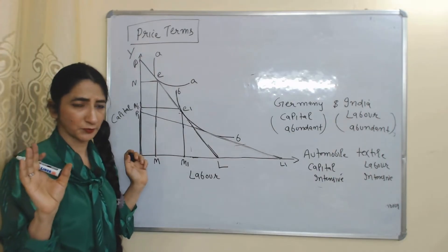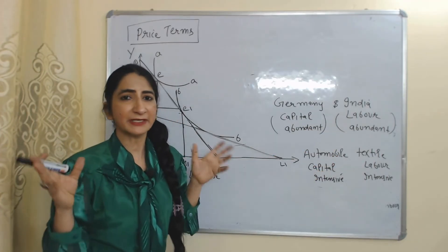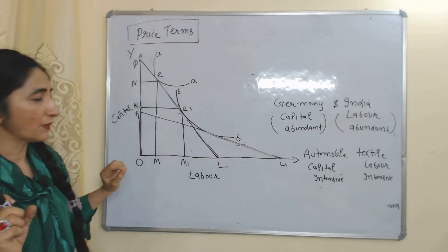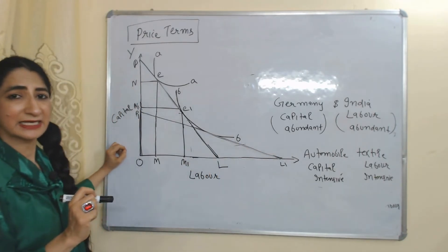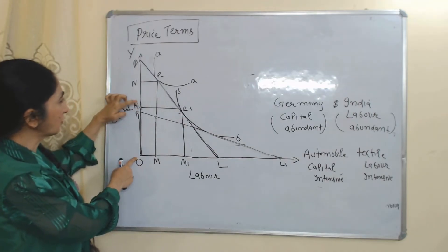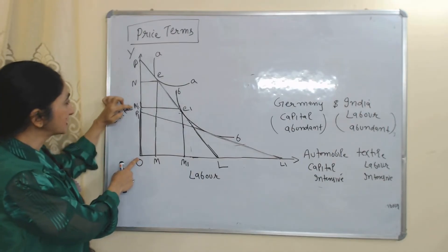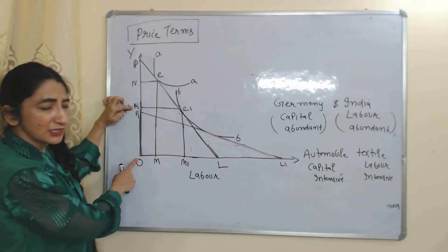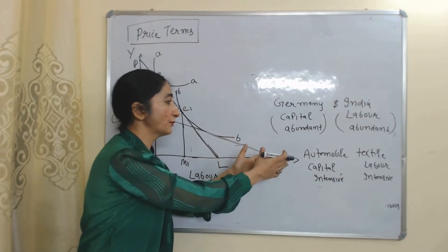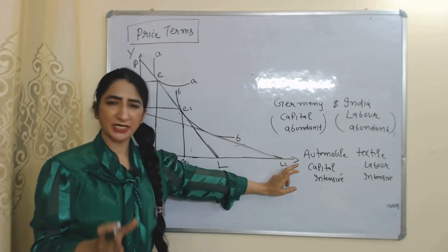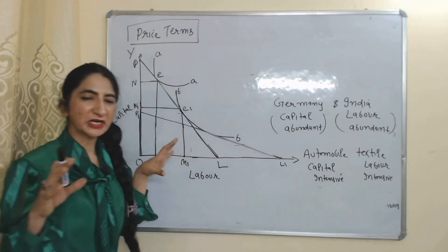The isoquants show different combinations of labor and capital that give the same amount of output. If Germany wants to produce one unit of automobile, it needs capital ON. If Germany wants to produce one unit of textile, it needs capital ON1. You can see that production of automobiles requires more capital than production of textiles — ON is greater than ON1. Since Germany is a capital-abundant country, Germany should increase production and export of automobiles, as automobiles are capital-intensive.